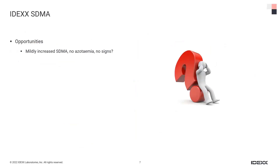What opportunity does finding a persistently mildly increased SDMA with no azotemia and no clinical signs afford us? There are two main things. First, it allows us to look for an underlying cause. Second, even if we can't find a cause for that kidney disease, it allows us to take steps to try and slow the progression of the kidney disease — giving patients a longer period of time without clinical signs.